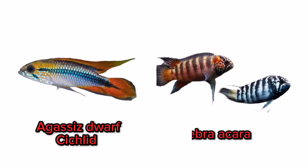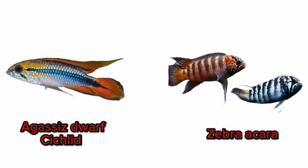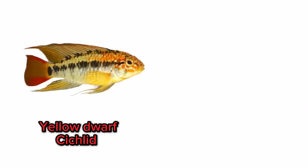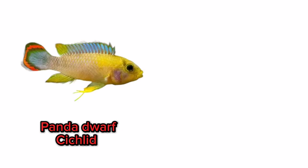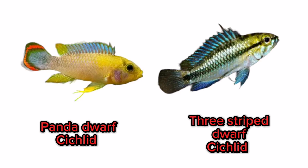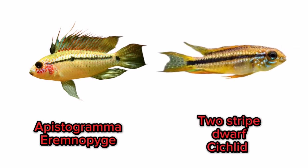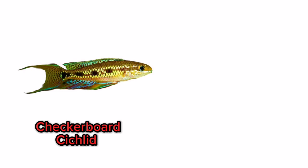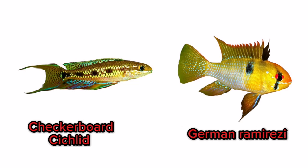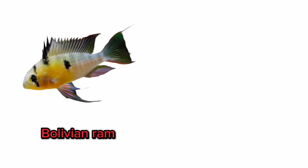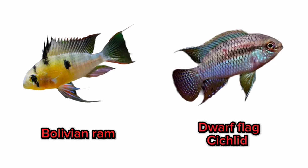Zebra Acara. Yellow Dwarf Cichlid. Cockatoo Dwarf Cichlid. Panda Dwarf Cichlid. Three Striped Dwarf Cichlid. Apistogramma. Two Striped Dwarf Cichlid. Checkerboard Cichlid. German Ram. Bolivian Ram. Dwarf Flag Cichlid.